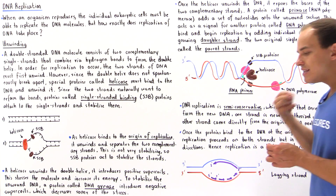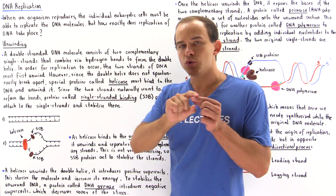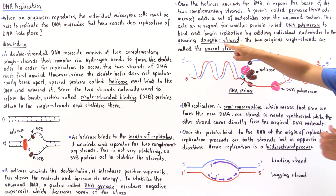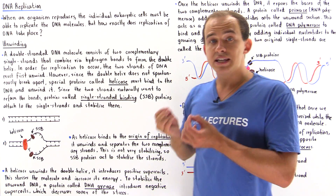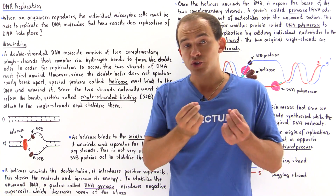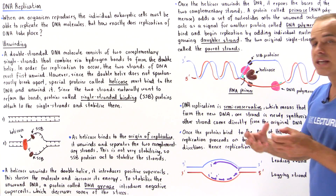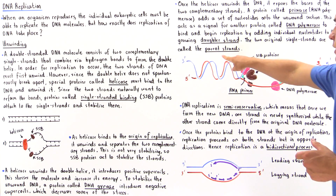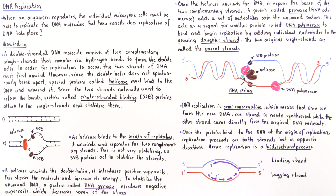DNA polymerase binds to the primer region and adds individual nucleotides one by one, extending our synthesized strand known as the daughter strand. The single-stranded DNA molecule being synthesized is the daughter strand, while the original single-stranded DNA molecule used as a template is known as the parent strand.